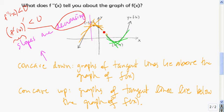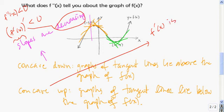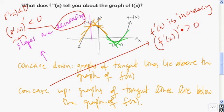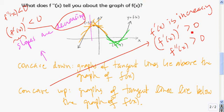Over here for concave up, we start off with a negative slope, then it's less negative, then zero, then the slopes are growing. So when the function is concave up, f prime of x — which gives a measure of the slope — is increasing. If f prime of x is increasing, then its derivative must be greater than zero. That derivative is f double prime of x, so f double prime of x has to be greater than zero. In summary: if f double prime is less than zero, the graph of f is concave down; if f double prime of x is greater than zero, the graph of f is concave up.